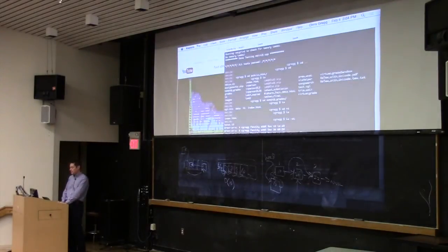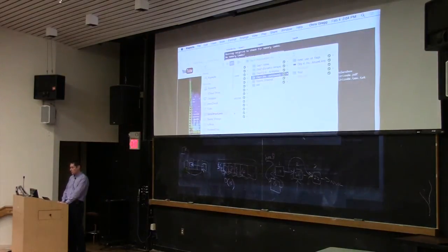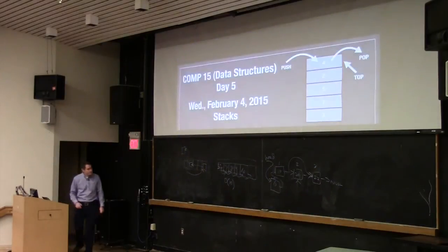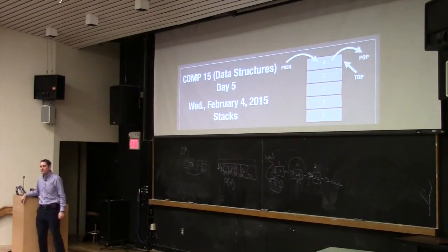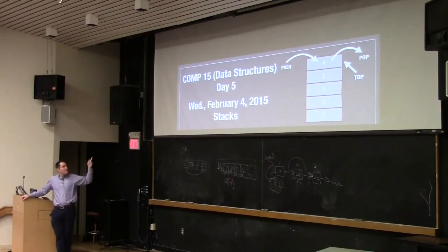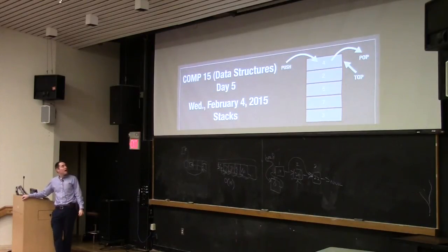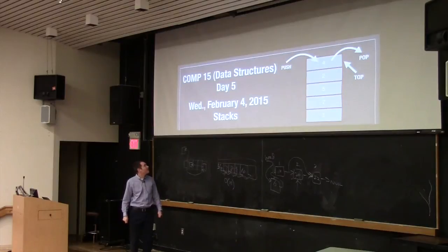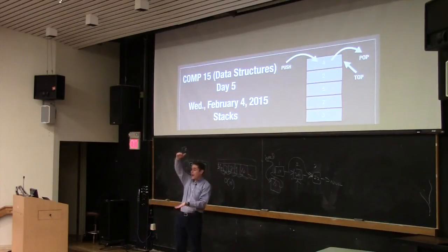We've started with a couple data structures that were mostly review. Linked lists were a little bit different, but it's a good review because there's lots to think about. We're going to start on another type — in this case an abstract data type. The one we're going to start talking about today is called a stack, which is actually modeled by a physical stack — like a stack of pancakes or Legos. You can only deal with the top element in a stack.